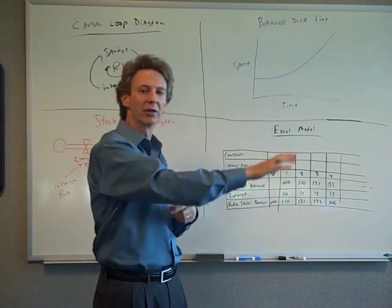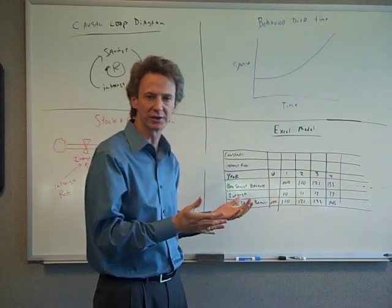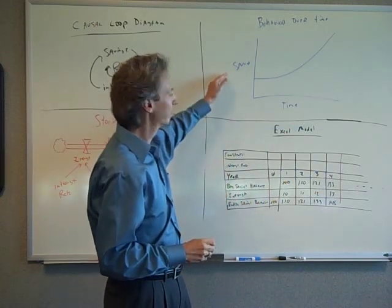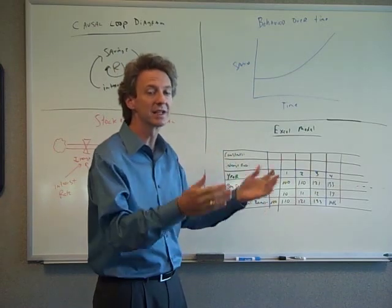This shape is exponential growth which all virtuous cycles really are, an exponential growth cycle. If you have $100, 10% interest, you get $10 in interest,